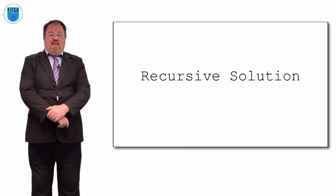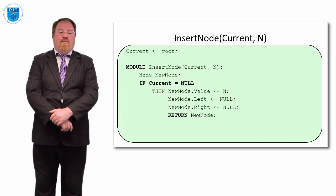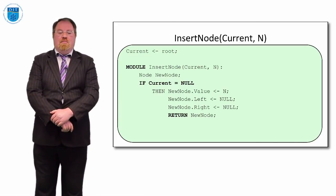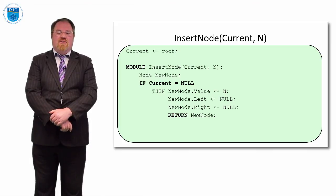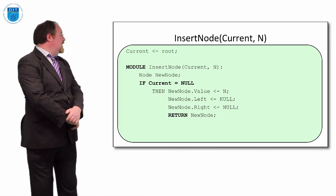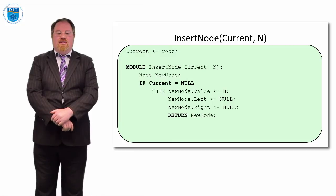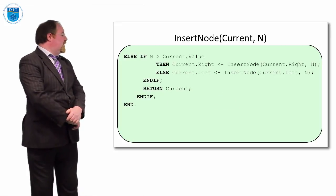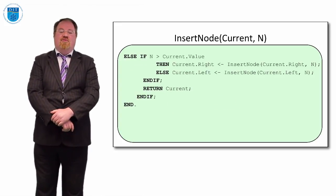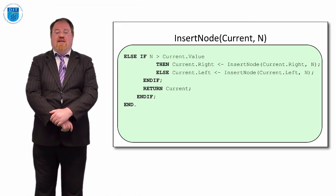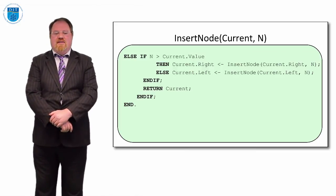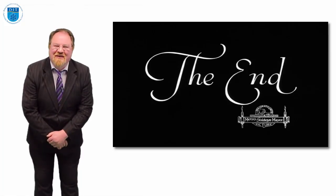For the recursive insert: we create a new node the same way, then the module 'insert_node' takes in the current node and the value n. If n is bigger than the current value we go right, otherwise we go left — that's the complete recursive solution. It's a much cleaner approach. Thanks very much, we'll see you in the next episode.